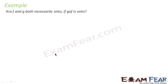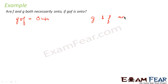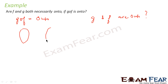Let's take one more example. The question says that gof is onto, and we have to tell whether f and g are onto or not. So given that gof is onto, we have to determine whether g and f are individually onto.